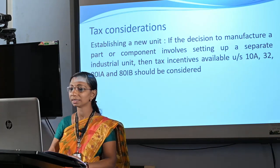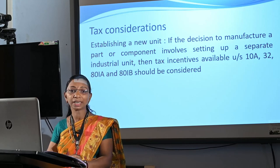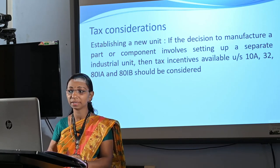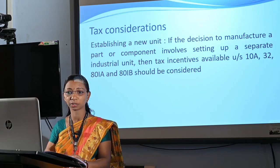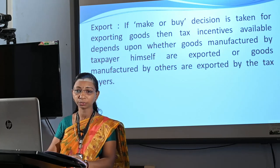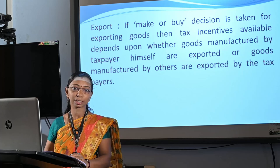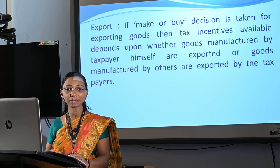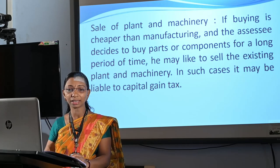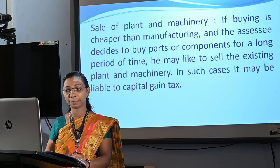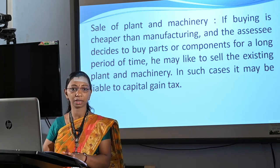There are certain tax considerations which are helpful for taking a make or buy decision. The first is establishing a new unit: if the decision to manufacture a part involves setting up a separate industrial unit, then tax incentives available under Section 10A, 32, 32A and 32B should be considered. For export: if a make or buy decision is taken for exporting goods, then tax incentives depend upon whether goods manufactured by the taxpayer himself are exported or goods manufactured by others are exported by the taxpayer. Then, sale of plant and machinery: if buying is cheaper than manufacturing and the assessee decides to buy parts for a long period of time, he may sell the existing plant and machinery, which may be liable to capital gain tax.